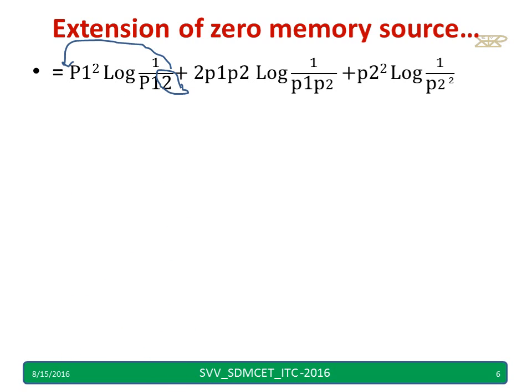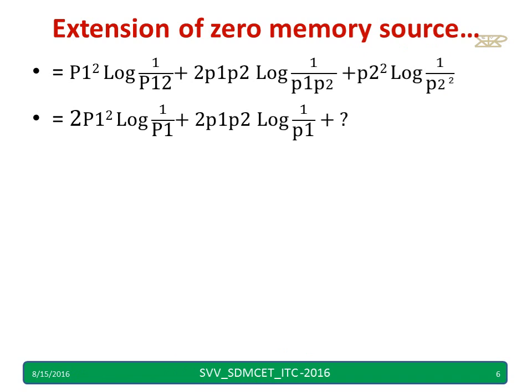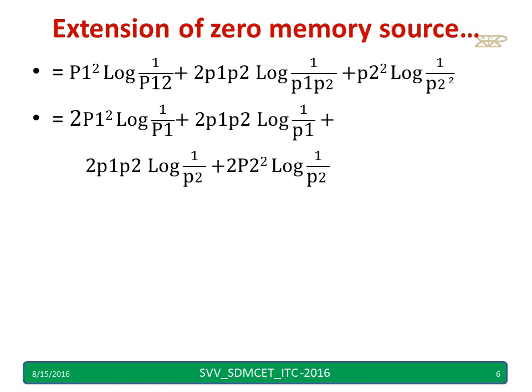Now I will simplify. The term p1·p1 becomes p1², and the 2 comes to the front. Similarly, p2·p2 becomes p2². Using log(a·b) = log(a) + log(b), I rewrite the equation as: 2·p1²·log(1/p1) + 2·p1·p2·log(1/p1) + 2·p1·p2·log(1/p2) + 2·p2²·log(1/p2).